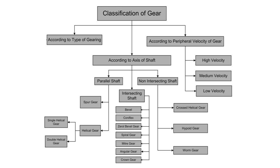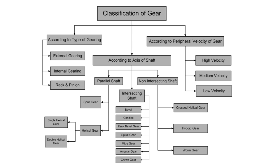According to the type of gearing, gears are classified into three groups: external gearing, internal gearing, and rack and pinion gears.